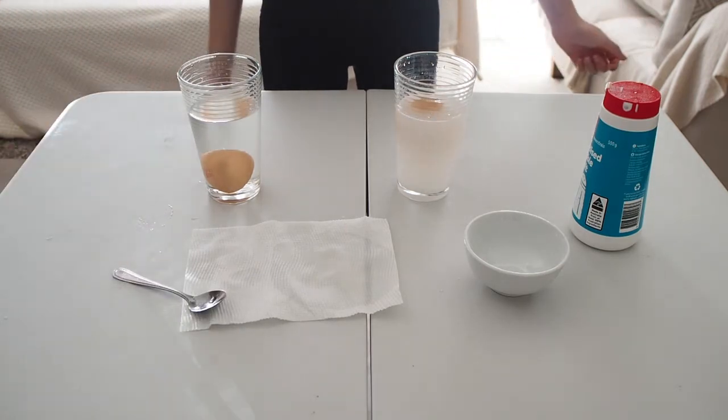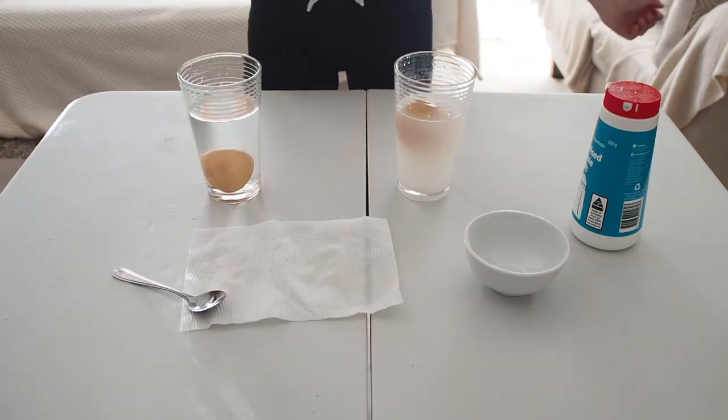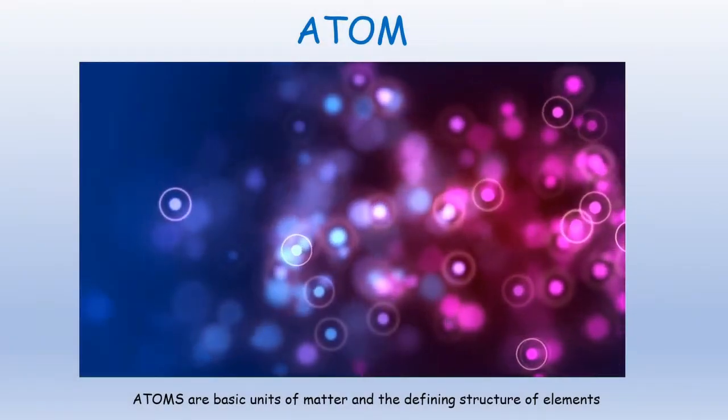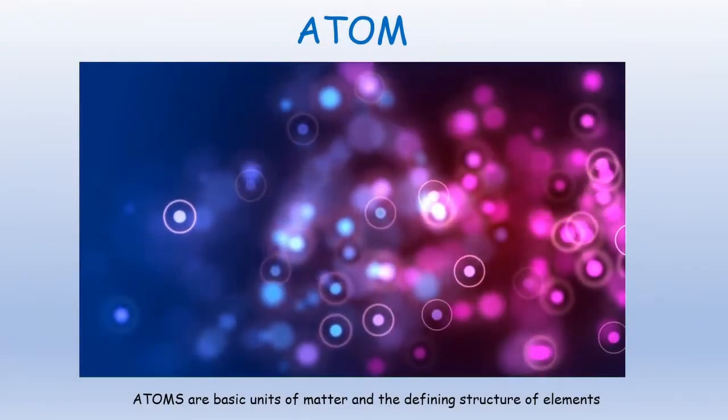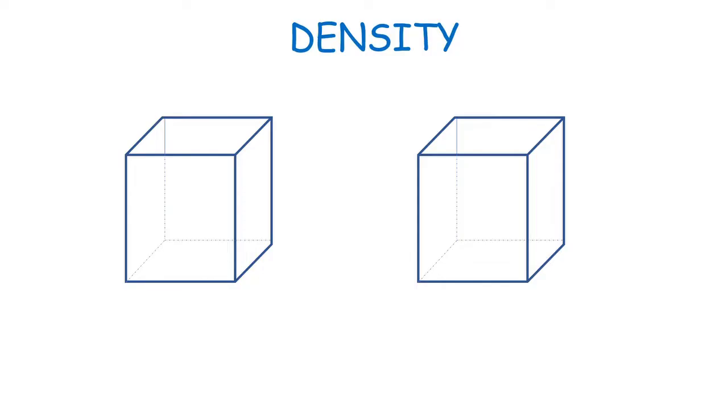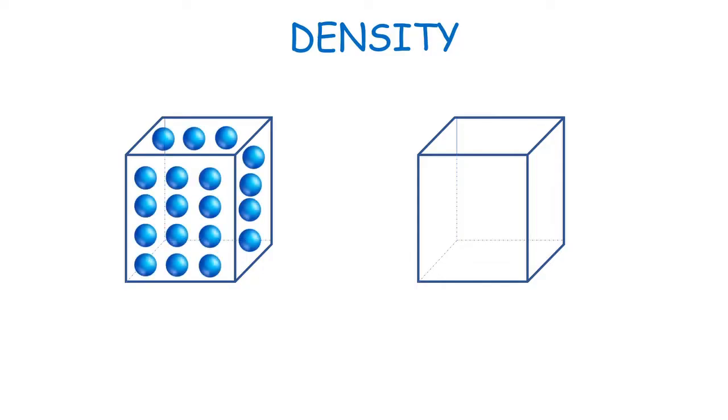And the reason for this is actually density. Atoms are the basic units of matter and the defining structure of elements. On my left, this is a matter or object with a high density, which means that the atoms are sitting very close to each other.